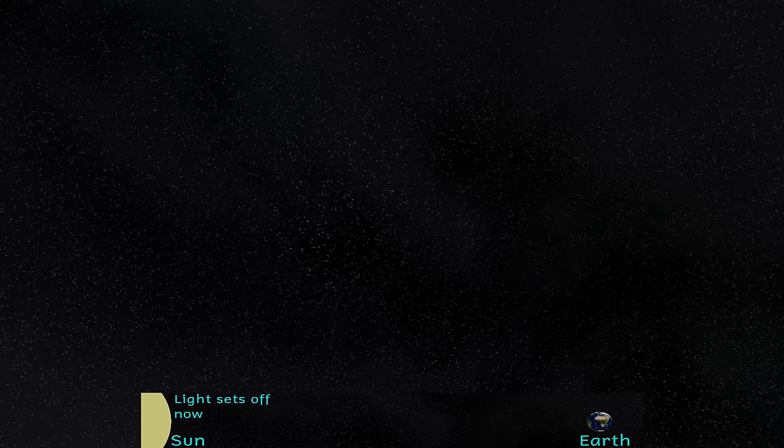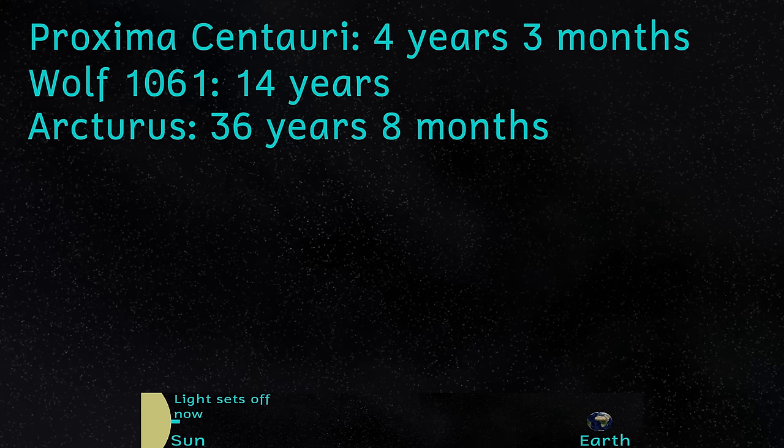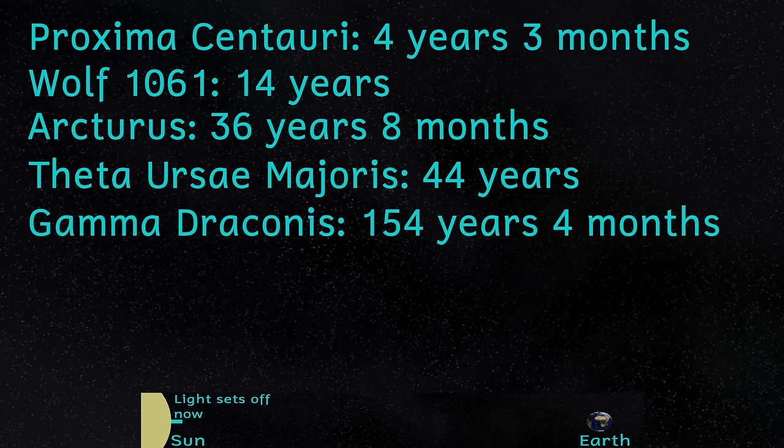We tend to think of the speed of light as incredibly fast, and it is. However, compared to the vastness of space, it's still quite slow. Light takes 1.255 seconds to travel from the moon to the earth, meaning we see the moon as it was 1.255 seconds ago. Light takes 500 seconds to travel from the sun to here on earth. If you imagine a photon of light setting off from the sun, the bottom of the screen will keep track of its journey towards us. Even at these speeds it takes years for light to reach us from even the nearest stars.